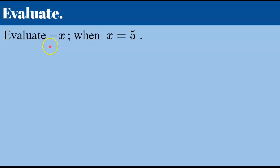Here's another one. We're asked to evaluate negative x when x is equal to 5. Well negative x we first need to understand that there's an invisible 1 here and an invisible multiplication sign. This is really negative 1 times x. So we're finding the opposite of x.